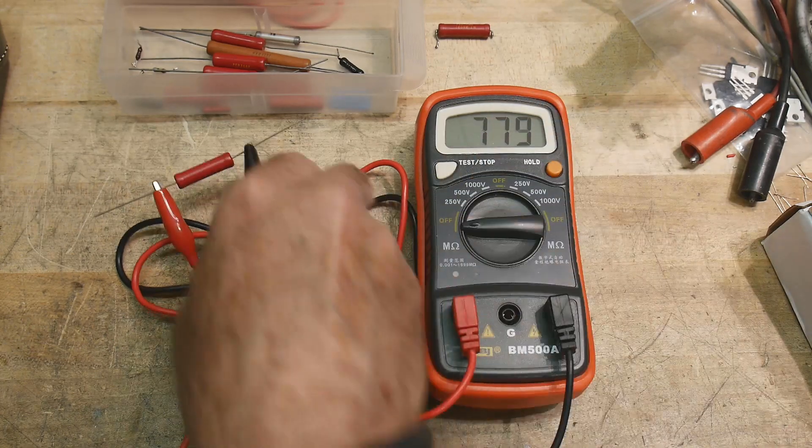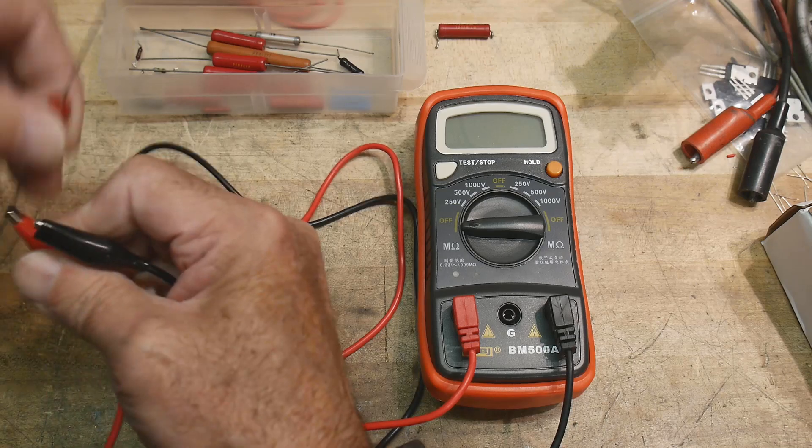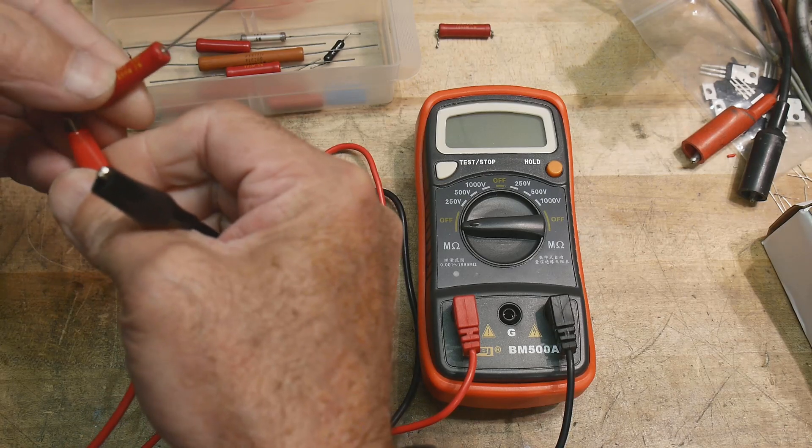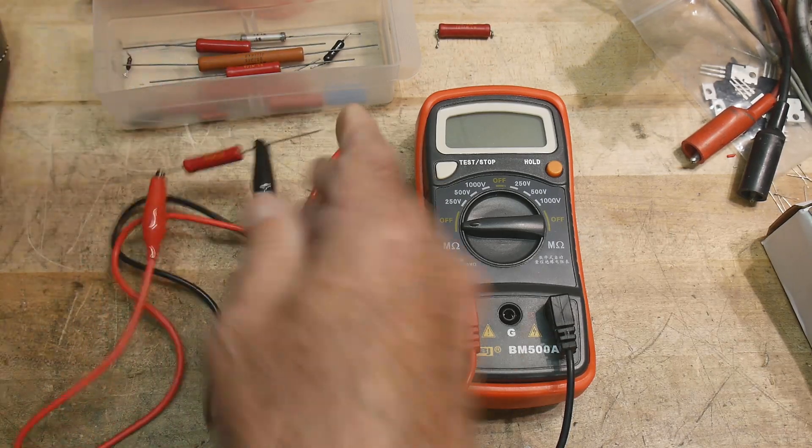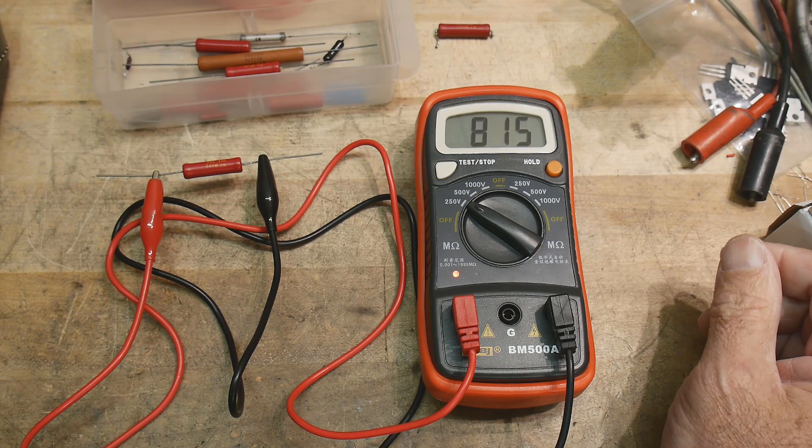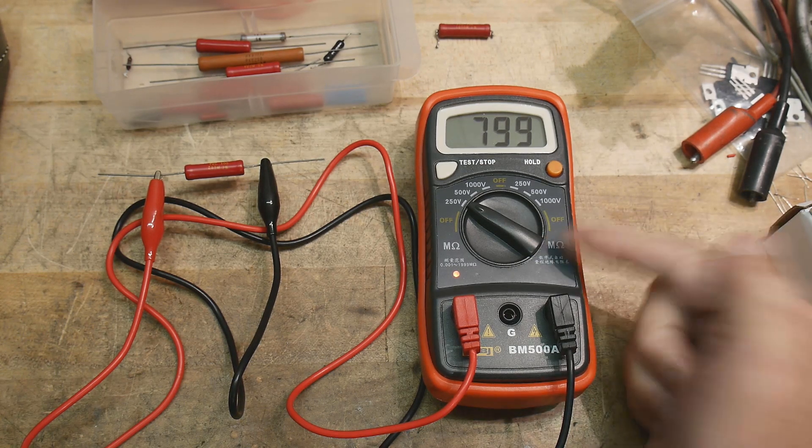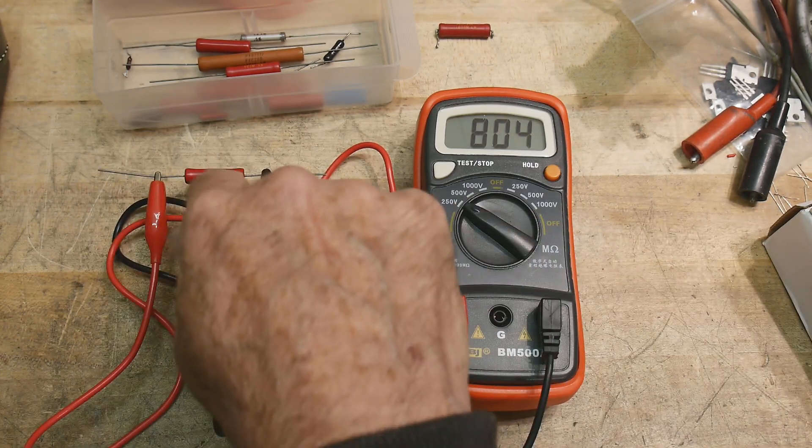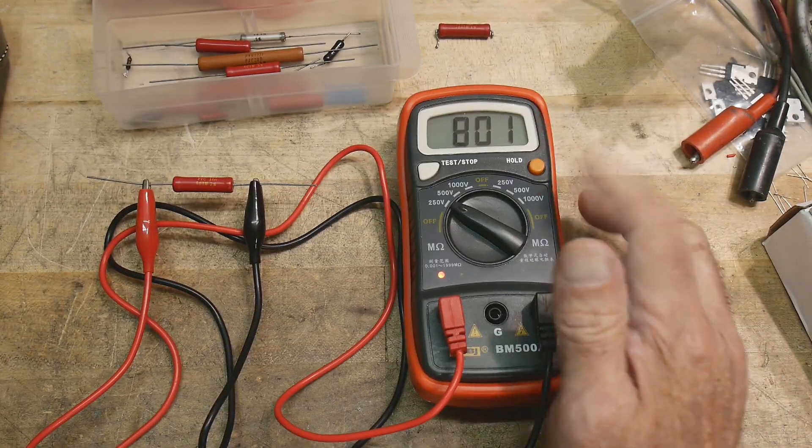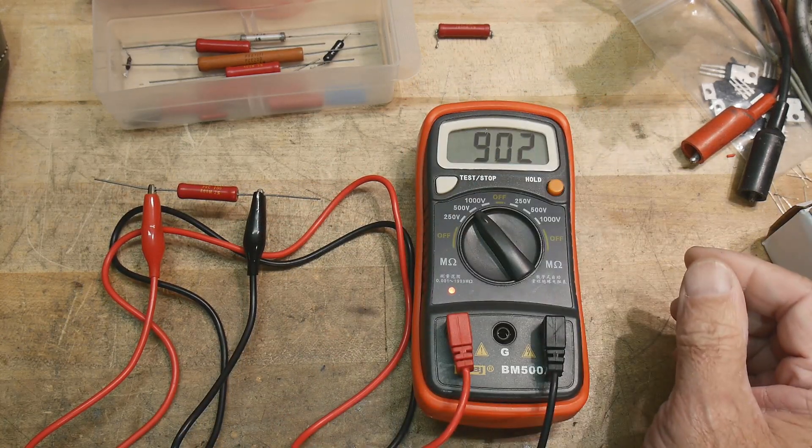And I have an 800 meg ohm, let's try that one. There we go 800. So it's nice to have a meter that can measure super high. I don't think I have a meter that'll measure these 800 meg ohm resistors but now I do. I think this is like $15 something like that great.